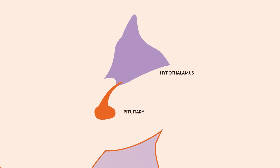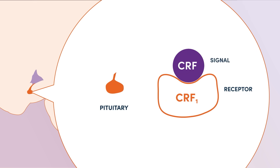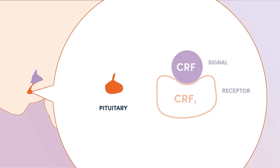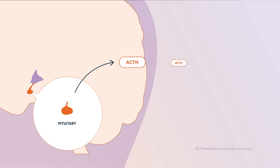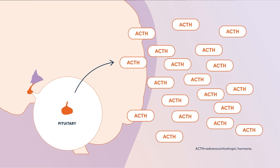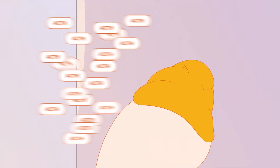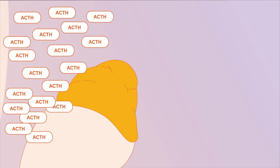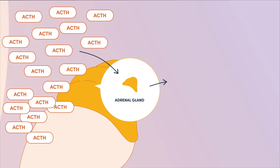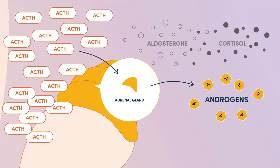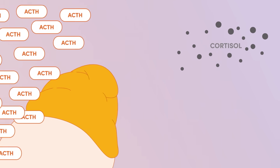Dr. Lin, you talked about two signals — CRF and ACTH. That's right. CRF is a signal that the hypothalamus sends to the pituitary. When the CRF signal goes to the pituitary, the pituitary releases ACTH throughout the body. What does high ACTH levels do? High ACTH levels in the adrenal glands act like an on switch. The adrenal glands act like an assembly line that's supposed to make a bunch of hormones, one of which is cortisol.